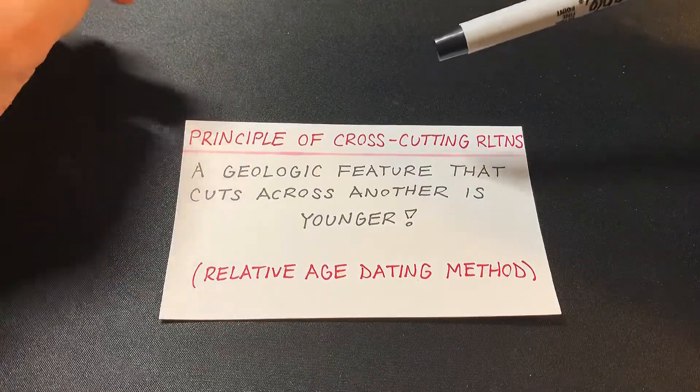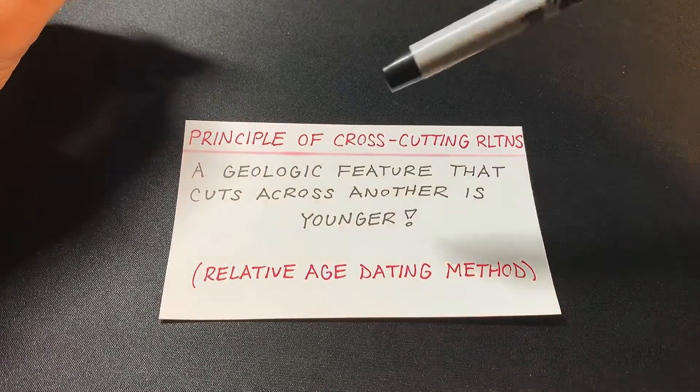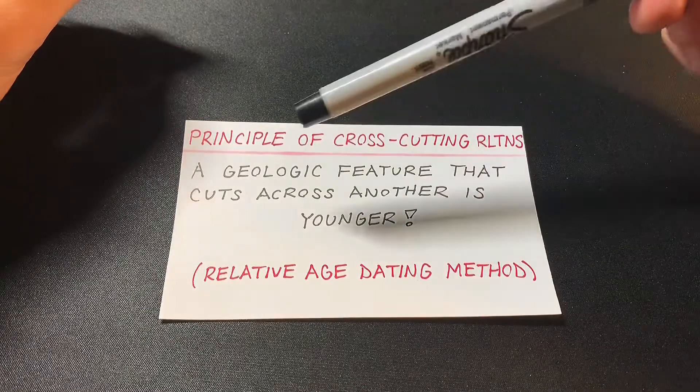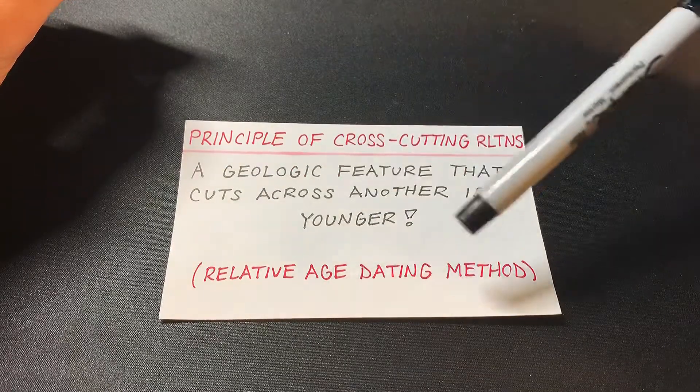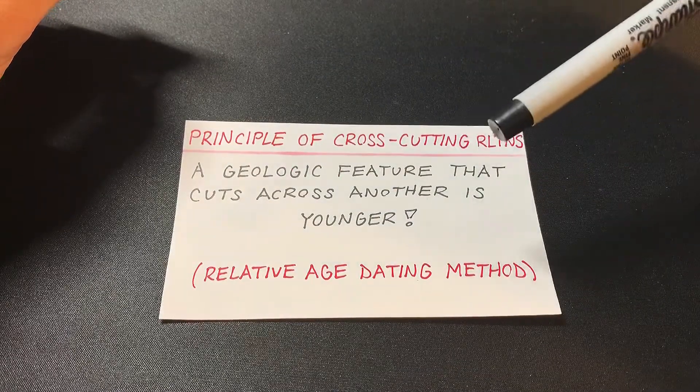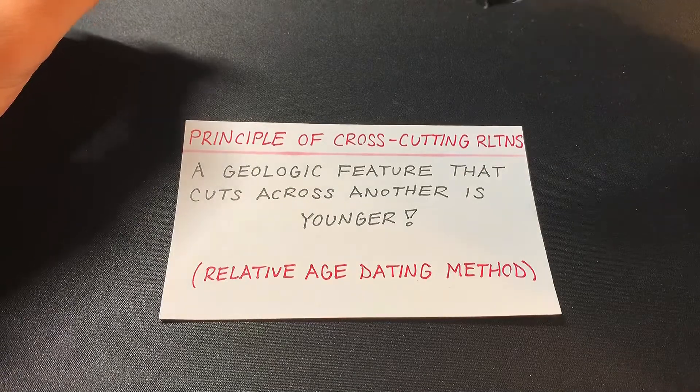So the principle of cross-cutting relationships states that a geologic feature that is cut across another is younger. And just I put in parentheses, it is a relative age dating method for rocks.